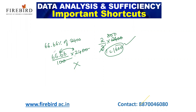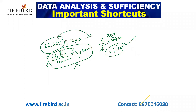This is how you should work very smartly. You should know that 66.66% of 2400 — its fractional value is 2/3. This is the shortcut method you should follow, not the long calculation method.